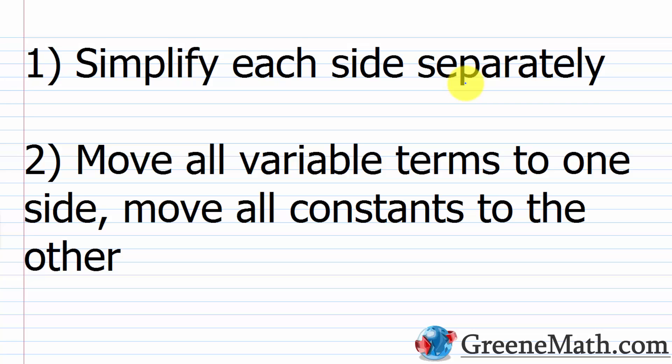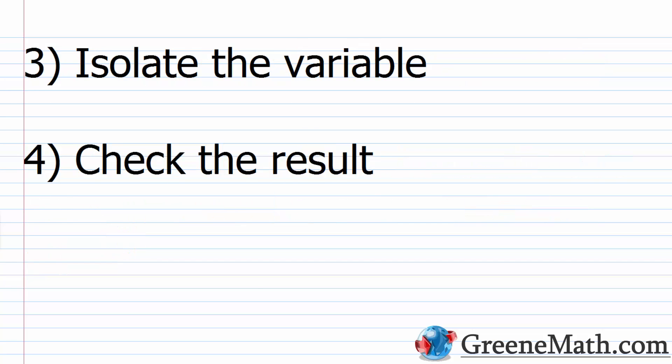The second step is to move all variable terms to one side, and then move all constants to the other. The way you're going to do this is by using your addition property of equality. Then the third step is to isolate the variable using the multiplication property of equality. And the last step is to check the result. There's absolutely no excuse if you have time to get a wrong answer — it is so easy to check the result and make sure you got the correct answer before you turn it in.